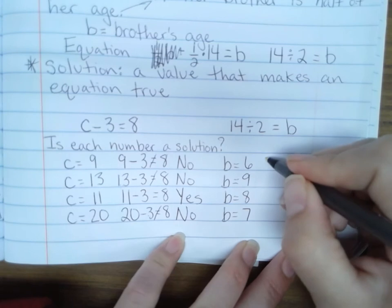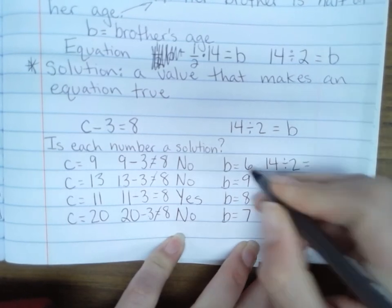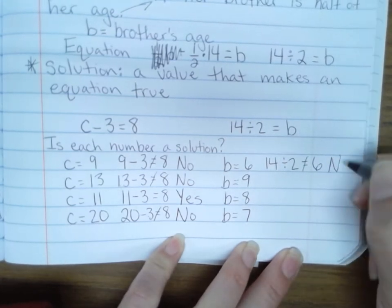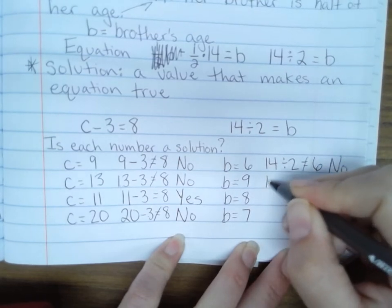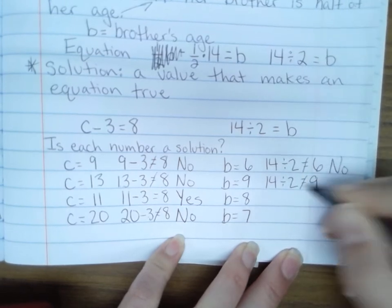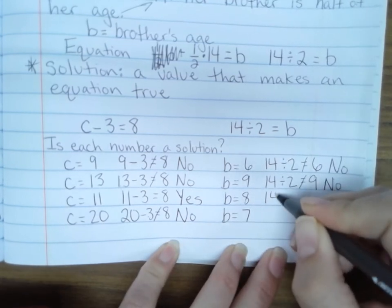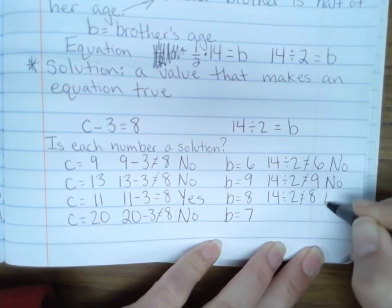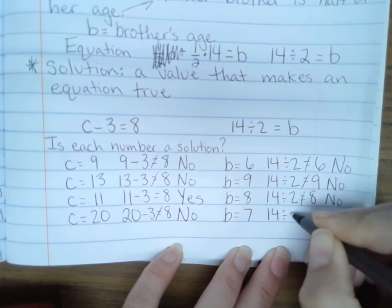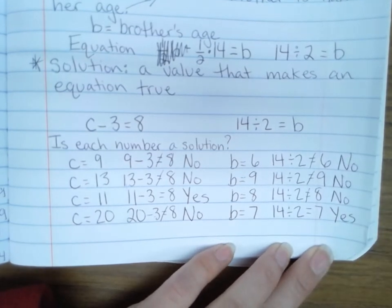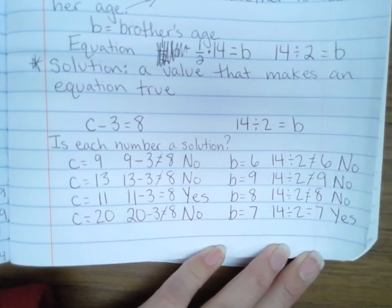Okay, let's try this over here. 14 divided by two, and I'm plugging in six for B. Is 14 divided by two six? No, so that's not a solution. 14 divided by two equals nine. Nope, not a solution. 14 divided by two equals eight. Nope, not a solution. 14 divided by two equals seven. Yes, seven is a solution to this equation. That's how to determine if your number is a solution. You're just plugging it back in where the variable is and seeing if it works. And that's all for today's lesson.